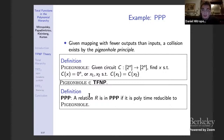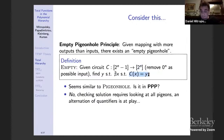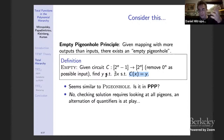Now consider the empty pigeonhole principle: given a mapping with more outputs than inputs, there exists an empty pigeonhole. The corresponding problem EMPTY: given a circuit mapping 2^(n-1) inputs to 2^n outputs (ignoring the zero string as input), find a Y such that no X maps to Y. At first glance this looks similar to the pigeonhole problem, but to verify Y you'd have to check that every single input doesn't map to Y — there's a universal quantifier at play.